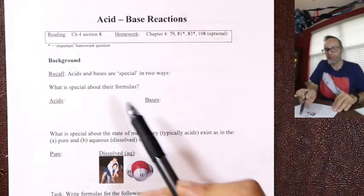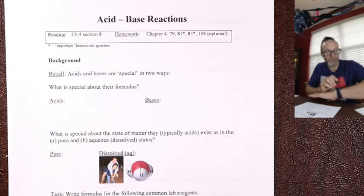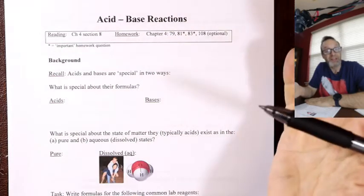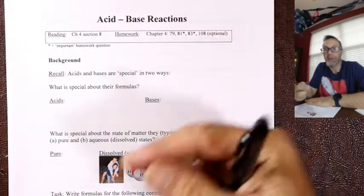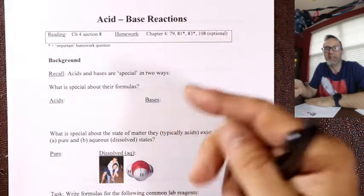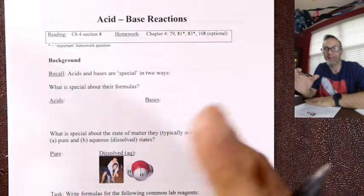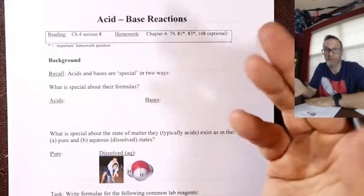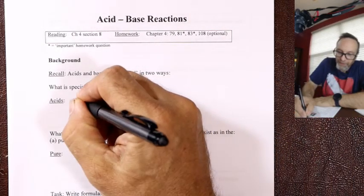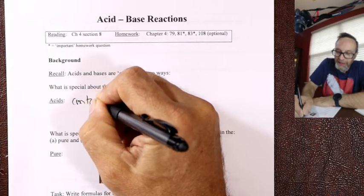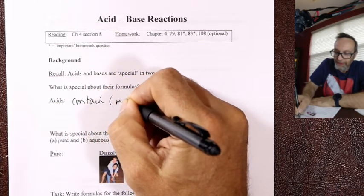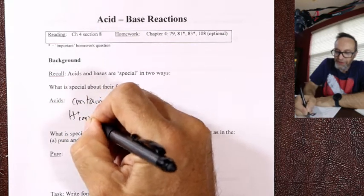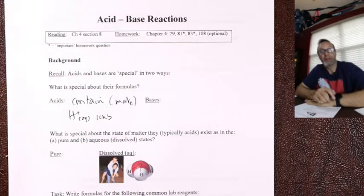Acids and bases are special in two simple ways. Acids contain or make H⁺ aqueous ions — that acidic, sour taste is the dissolved H⁺ ion. That's what acids do.